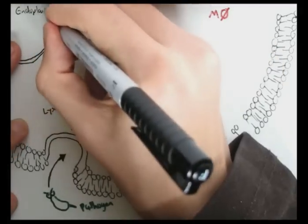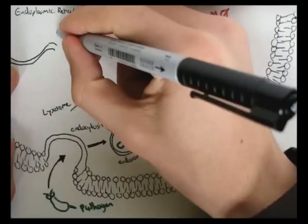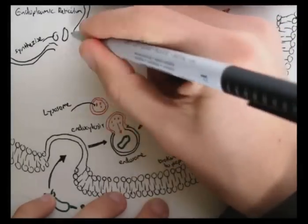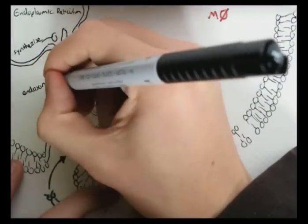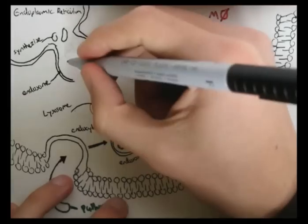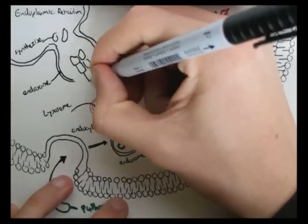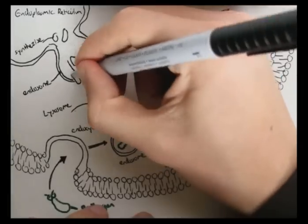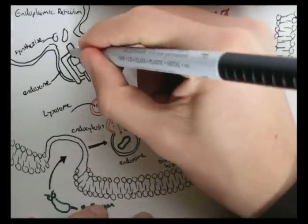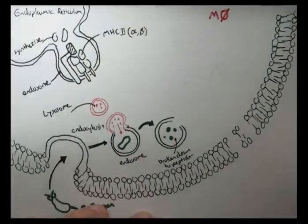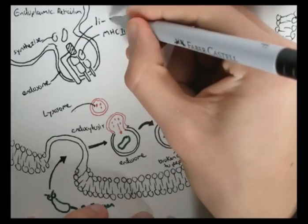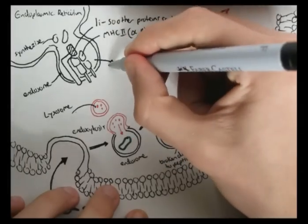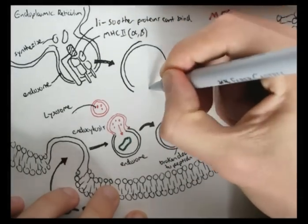Now on the other side of the cell in the endoplasmic reticulum or ER, the MHC class 2 molecule, consisting of alpha and beta domains, have already been synthesized. But the MHC class 2 binding site is blocked. A protein called Li, consisting basically of two parts, blocks the site of binding so that no other peptides can bind to it just yet.